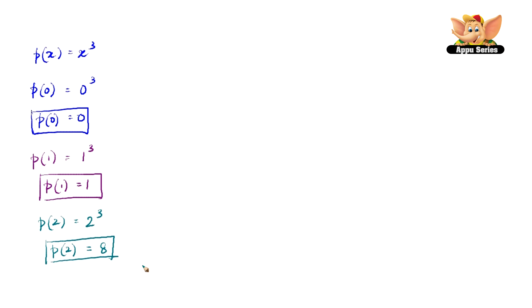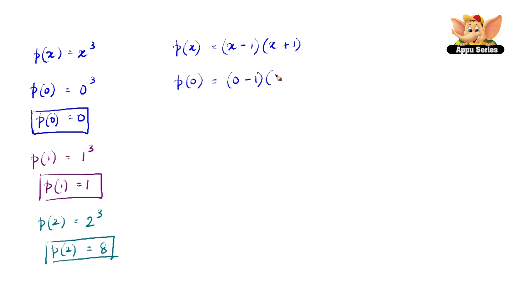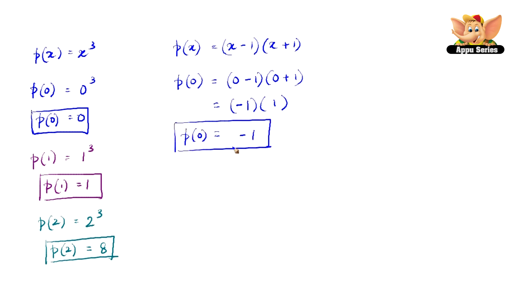Let us take one final problem: p of x equals x minus 1 into x plus 1. The first value is p of 0, so we have 0 minus 1 into 0 plus 1. 0 minus 1 is minus 1, and 0 plus 1 is plus 1. Negative 1 multiplied by positive 1 gives minus 1. Therefore, p of 0 is minus 1.